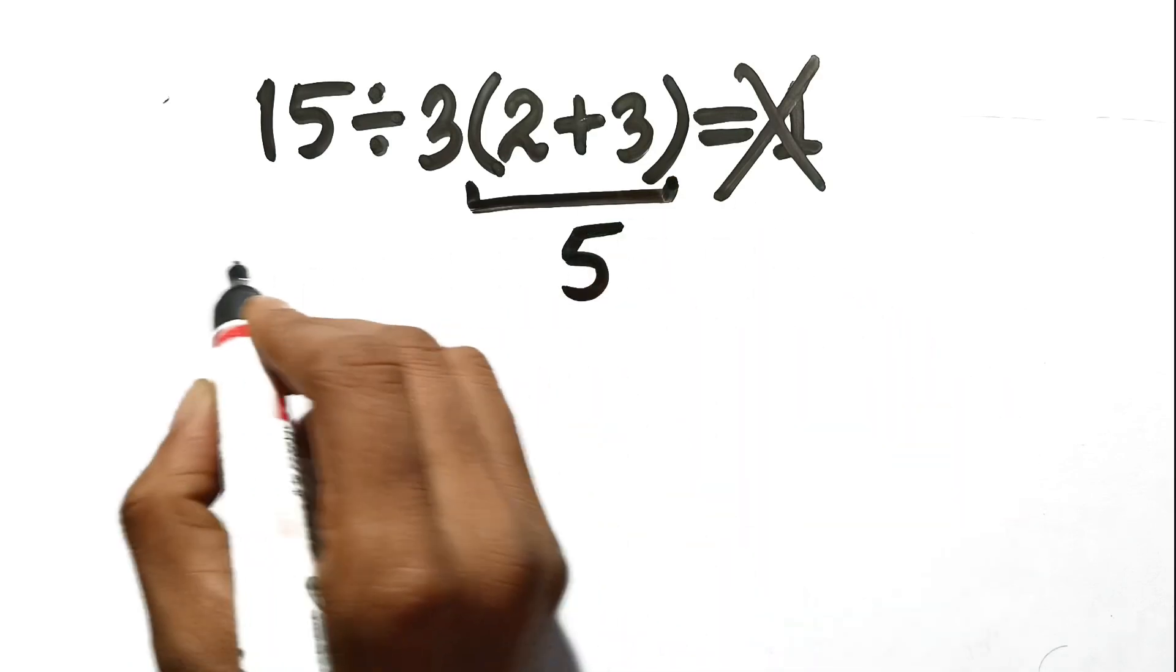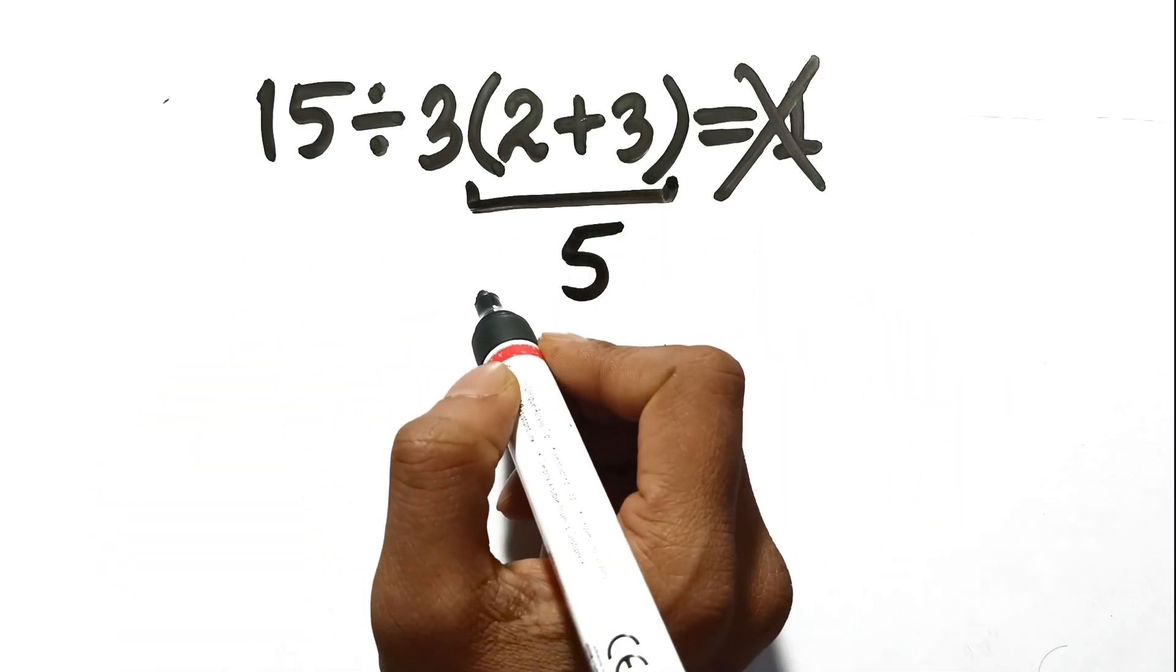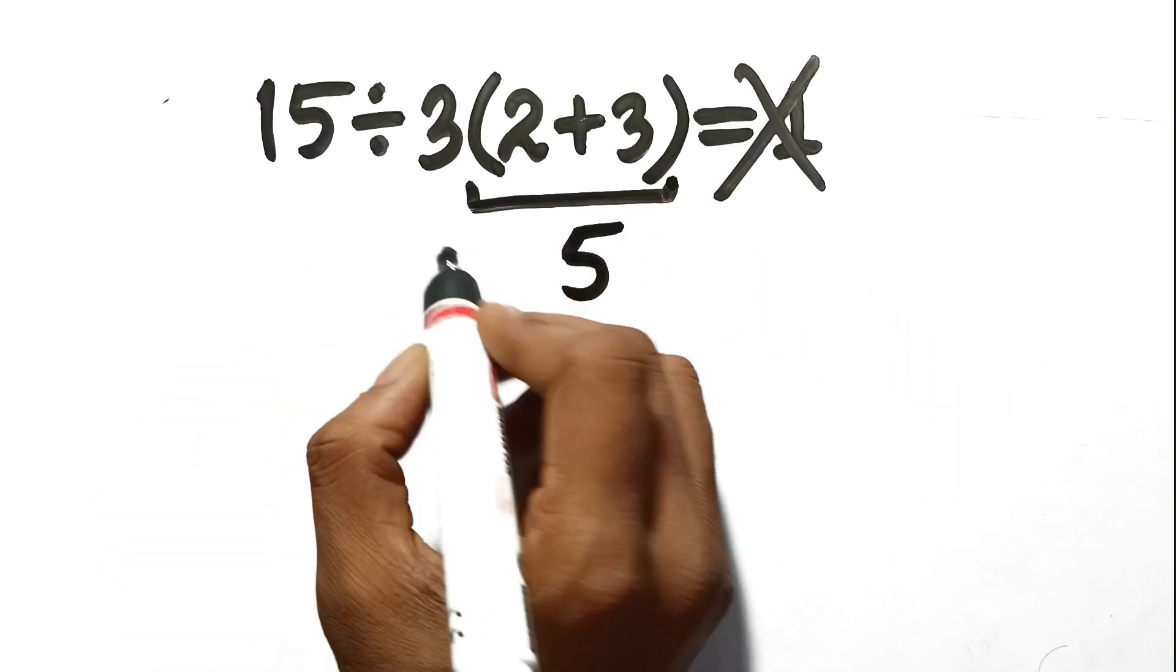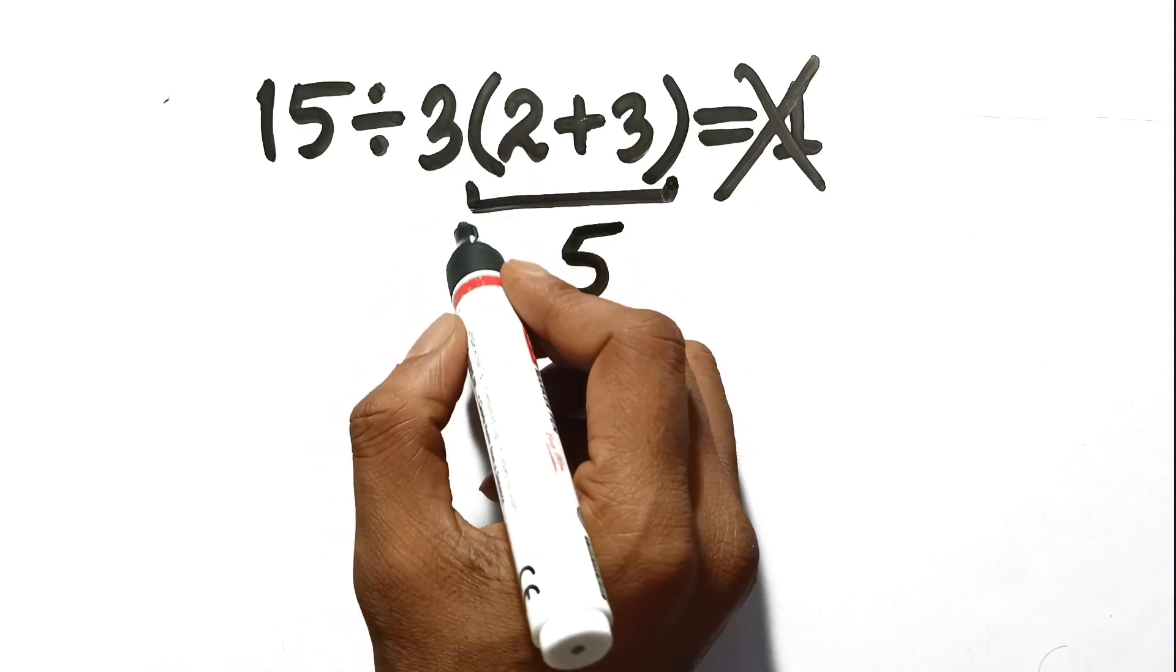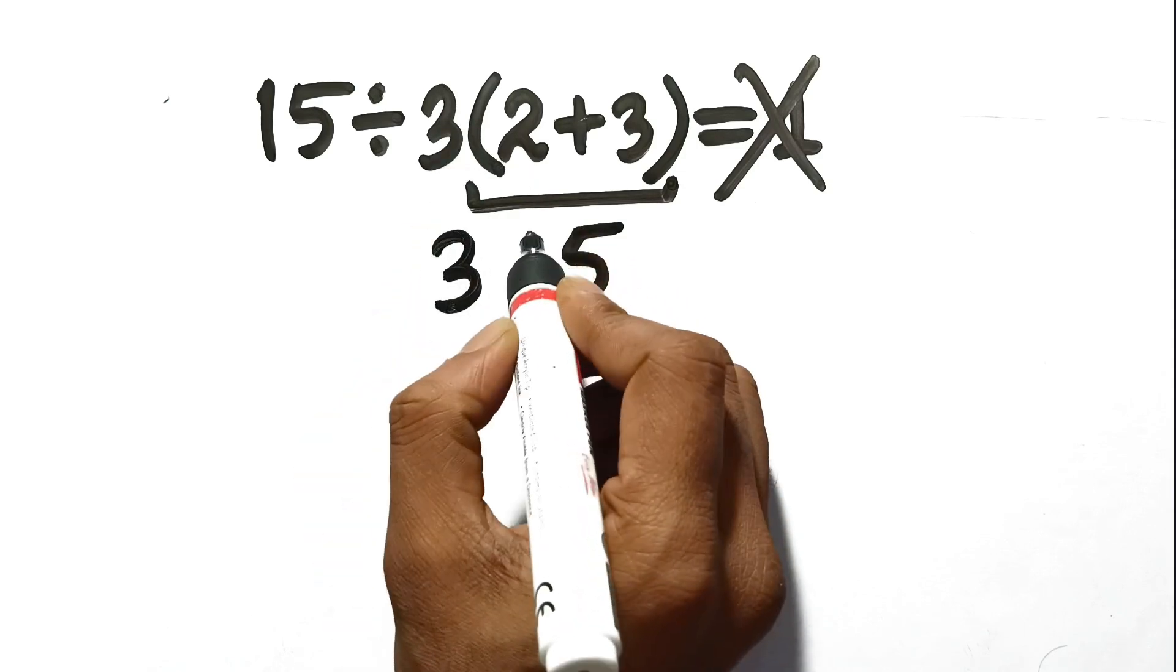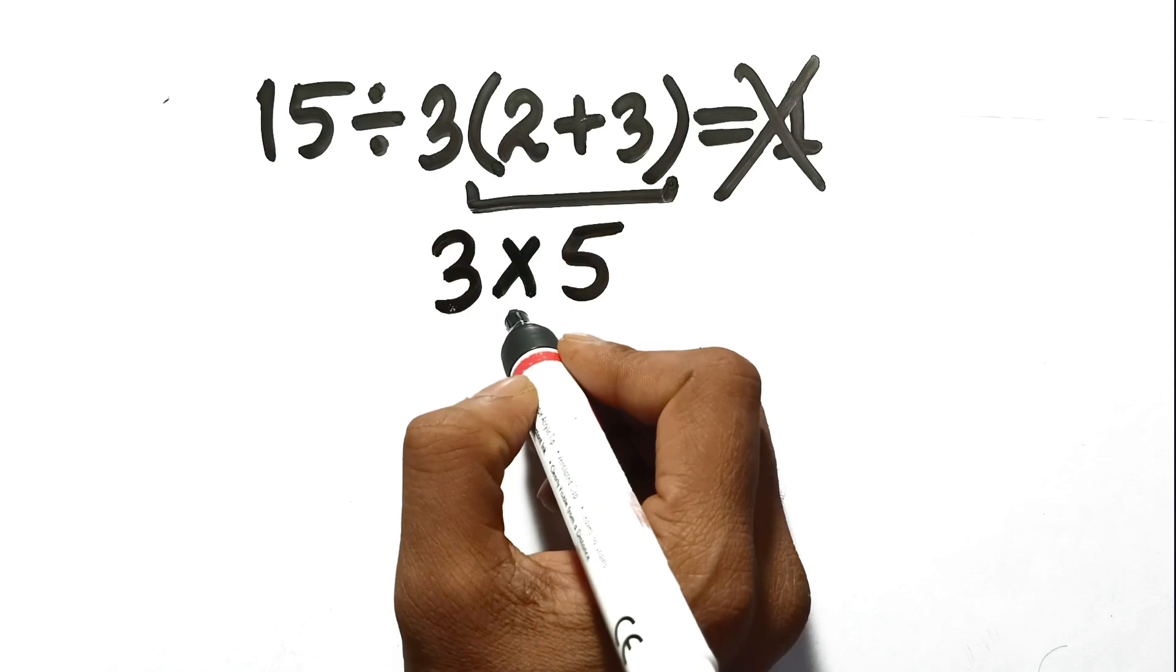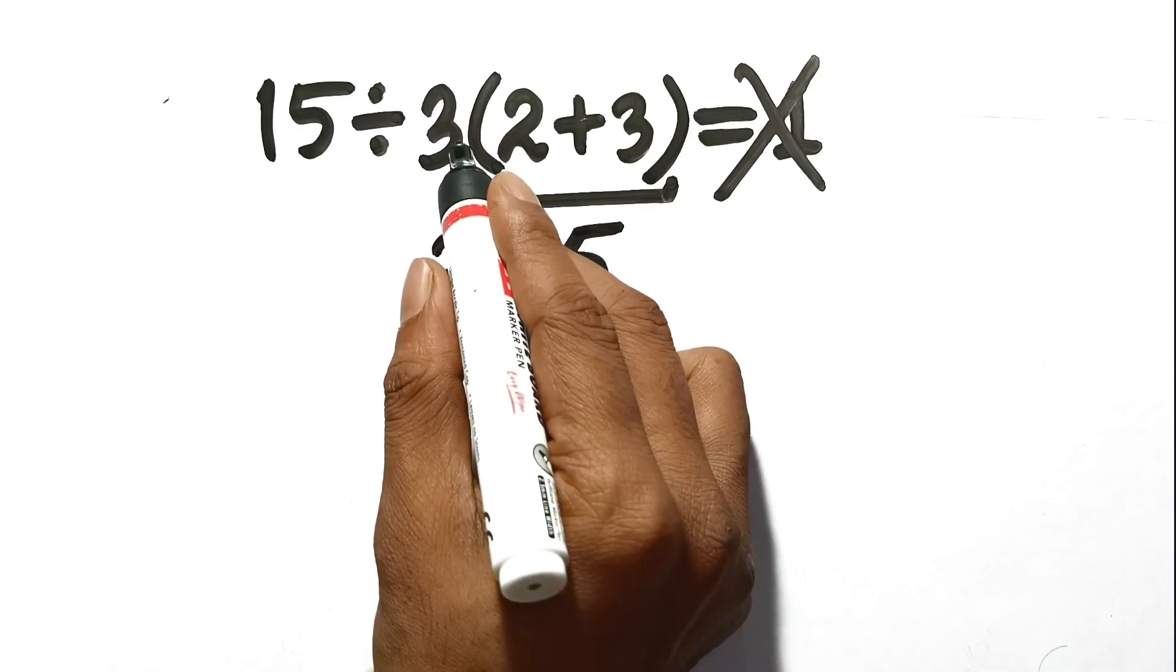But here is where everyone goes completely off the rails. Because that 3 is sitting right next to the parentheses with no visible sign, it feels like it is physically attached. It feels like it has a stronger bond than the division.